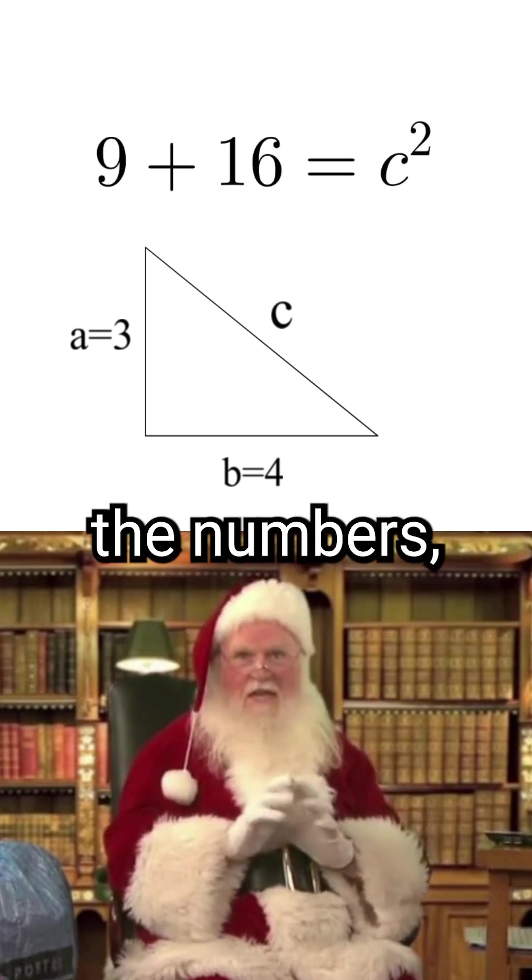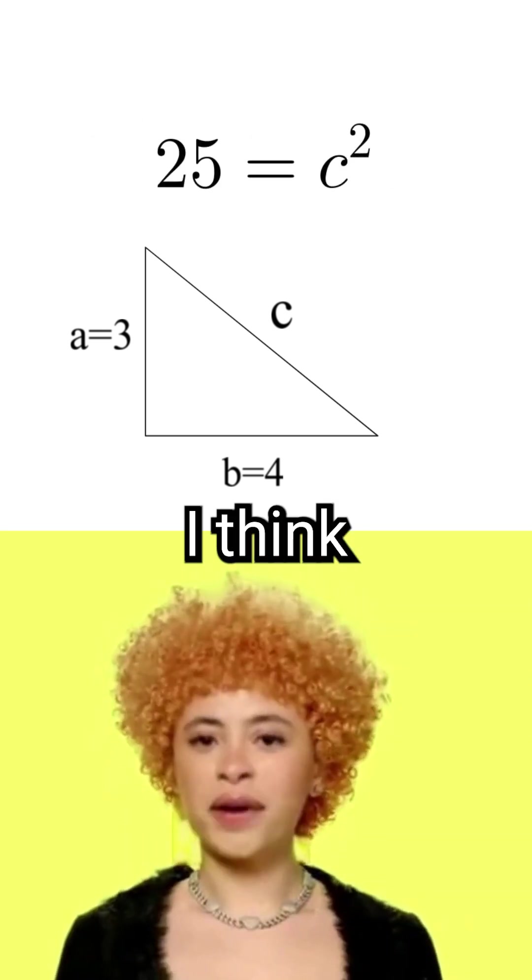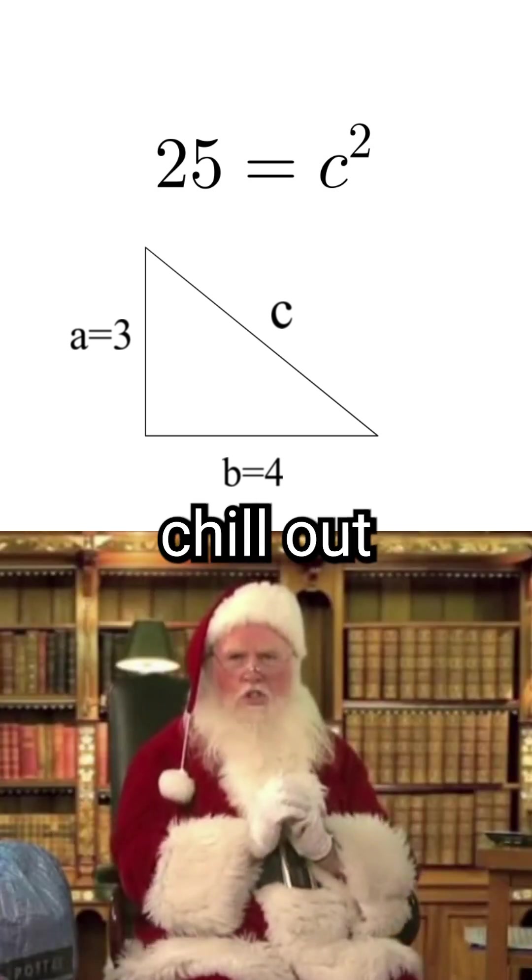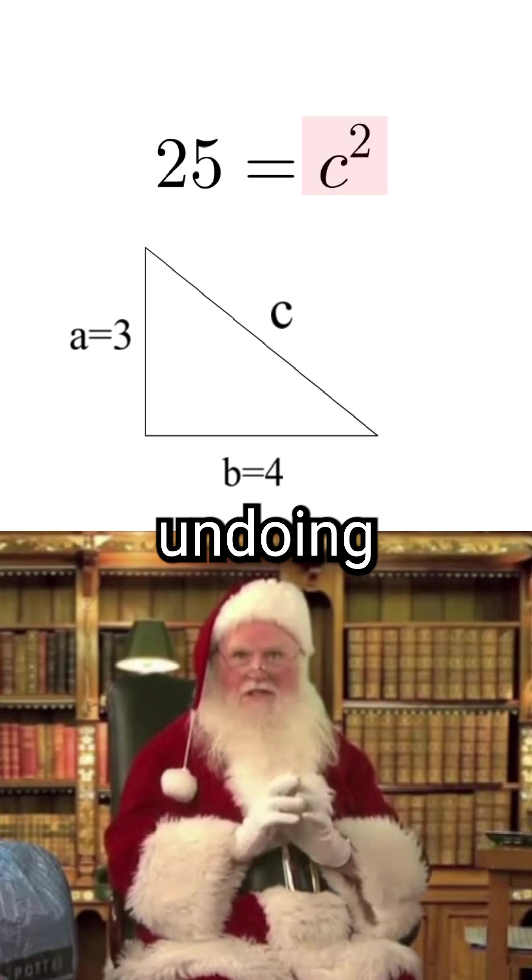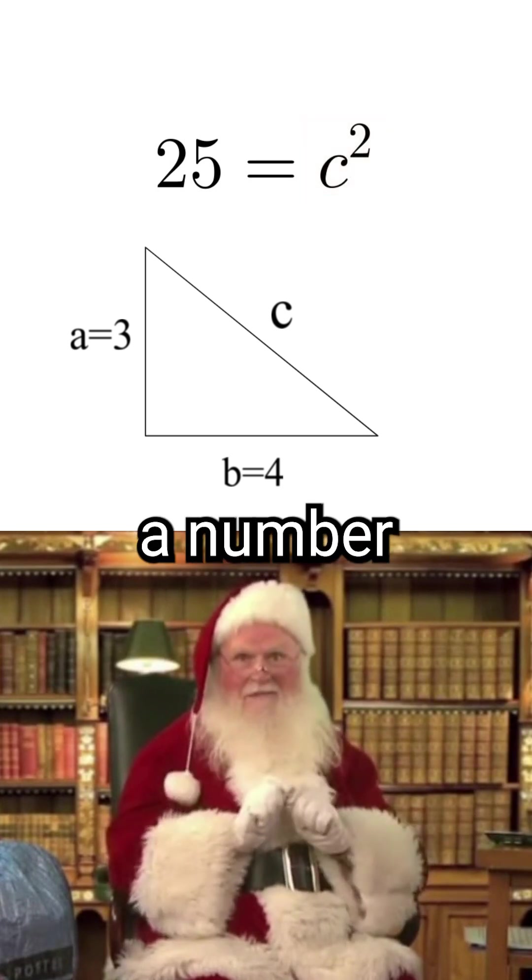I think you're forgetting about the c. No I haven't, chill out. To isolate the c, you want to think about undoing this exponent. The opposite of squaring a number is taking its square root.